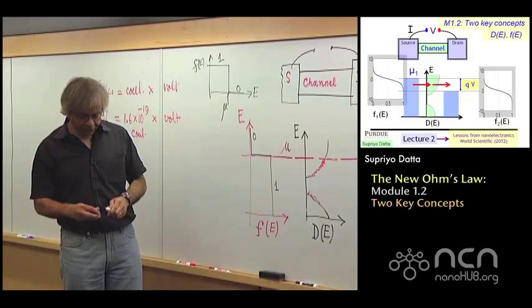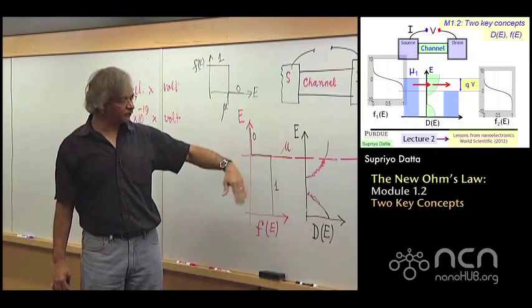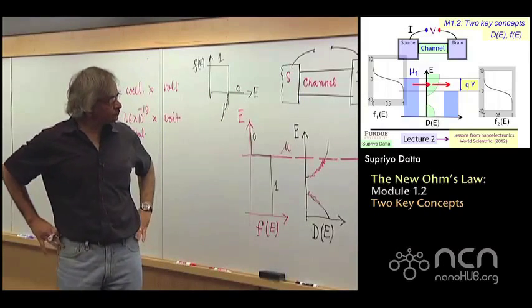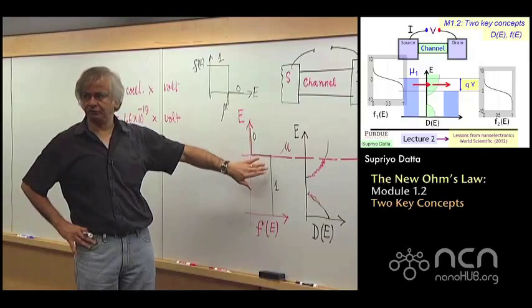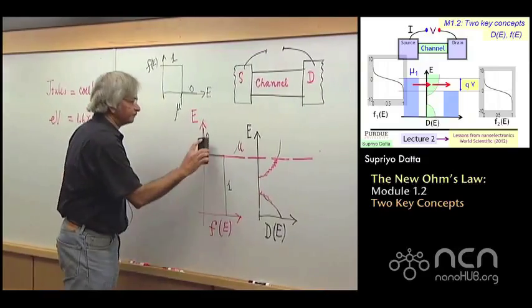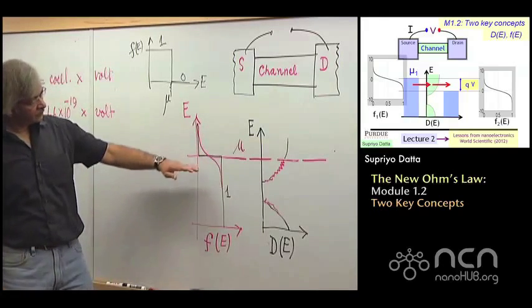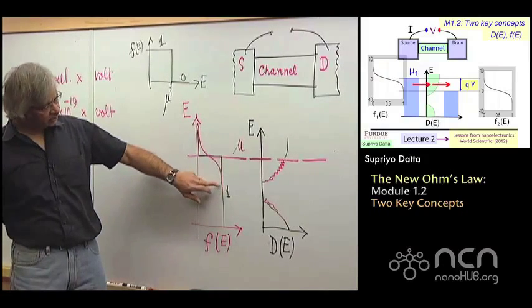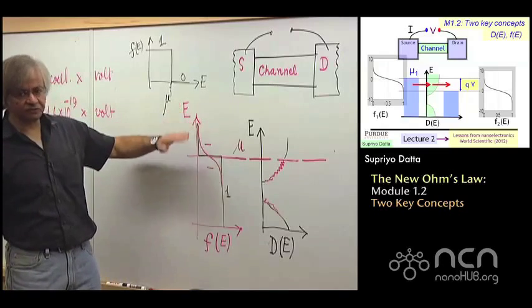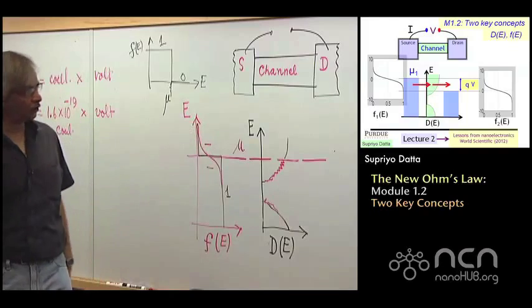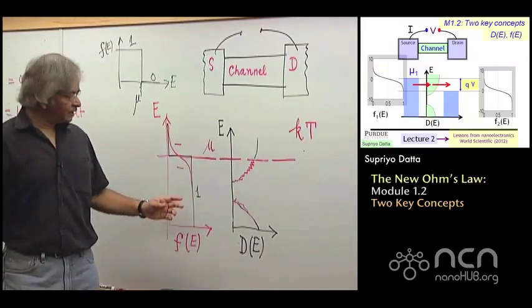Now this is exactly what the Fermi function looks like at zero temperature. That's when everything up to mu is precisely filled. Everything above mu is empty. Now, at non-zero temperatures, this thing is somewhat diffused, this boundary. That is, what happens is the picture looks something like this. So, if you go way below the chemical potential, it becomes 1. And if you go way above it, it becomes 0. But there is an energy range here, over which it changes from 0 to 1. And that energy range is of the order of kT, where k is the Boltzmann constant and T is the absolute temperature.